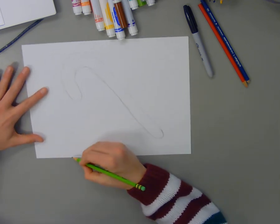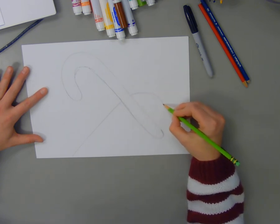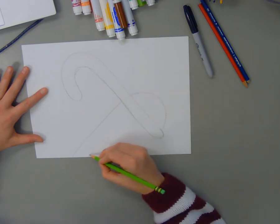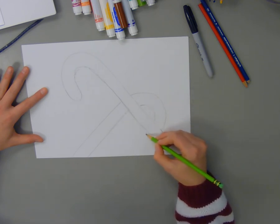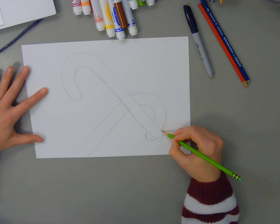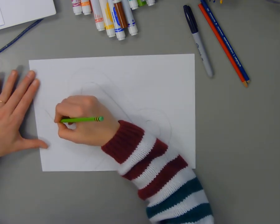Now when I draw my other candy canes, I want to make sure that I go around my first candy cane to make sure that it looks like they are overlapping, that one candy cane is in front of the other. Now, I could draw over it and then erase out as well, either way would work.